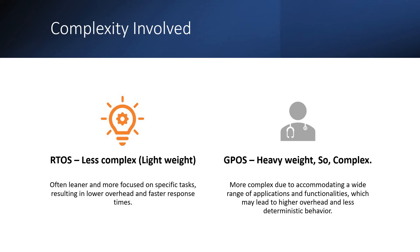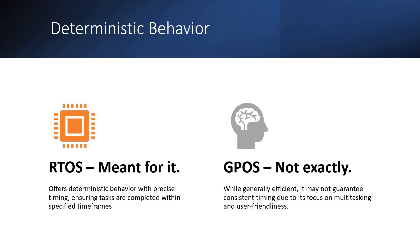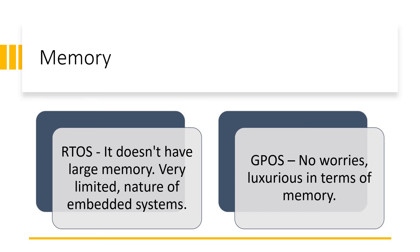RTOS is lighter — remember that. Regarding deterministic behavior, RTOS is meant for that. RTOS offers deterministic behavior with precise timing, ensuring tasks are completed within specific time frames. GPOS, on the other hand, is efficient but will not guarantee consistent timing, due to the focus on multitasking and more user-friendly tasks.